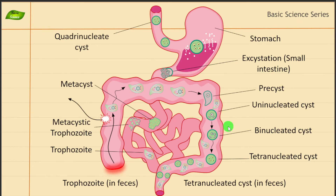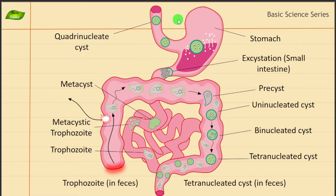Hello everyone, welcome to today's video. Today we will be understanding the life cycle of Entamoeba histolytica. In this illustration-based video, I'm going to design this entire image from simple basic components I've already designed, compile them all together, and during that process I'll also explain the details of the life cycle. You can see a lot of labeled components — I'll use this information to create the image and understand the life cycle. So without any delay, let's start the designing process.